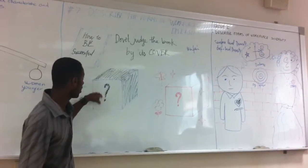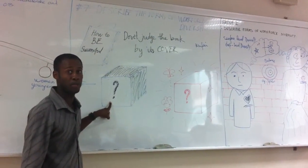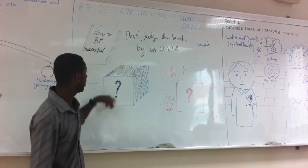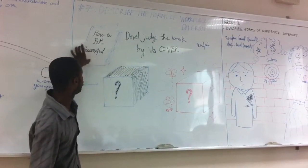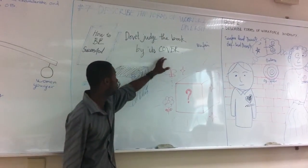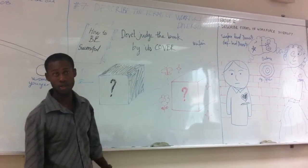If you don't go deeper to identify what we have inside of it, probably you'll miss the point, to give a good orientation to your organization. That's why we come with these two terms. How to be successful. Don't judge the book by its cover. Try to go deeper instead of going to the surface. Thank you.